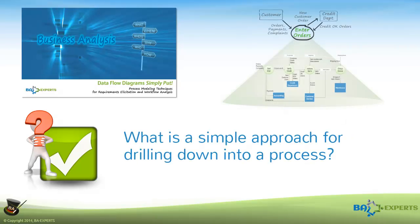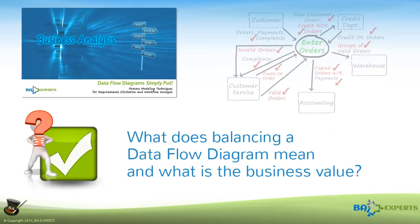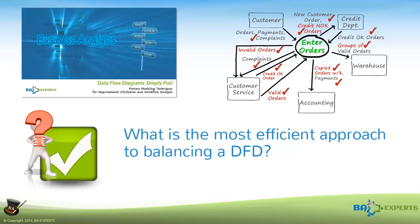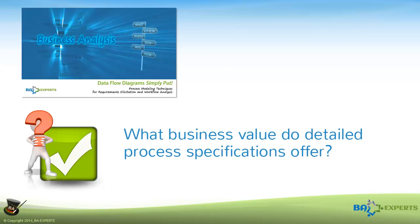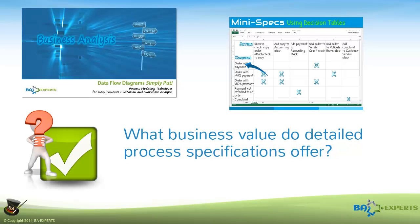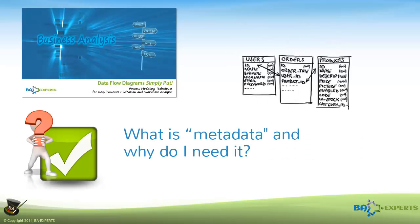What's a simple approach for drilling down into a process? How can I show the internal processes and flows that produce the results? What does balancing a Dataflow Diagram mean, and what is the business value? What is the most efficient approach to balancing a DFD? How can I express detailed specifications for processes and data? What business value do detailed process specifications offer? What is metadata, and why do I need it?